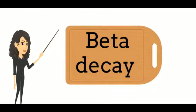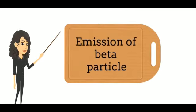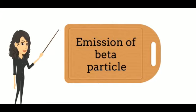Today, we will talk about beta decay. It is a type of radioactive decay in which a beta particle is emitted from an atomic nucleus.